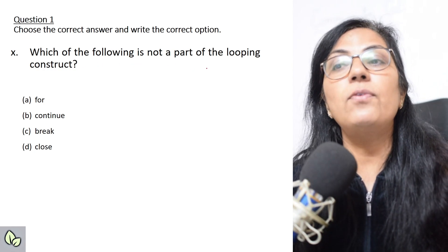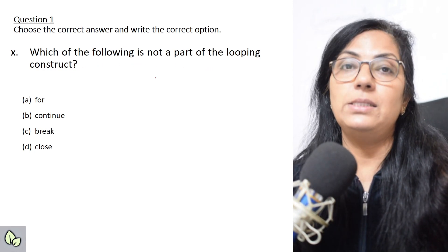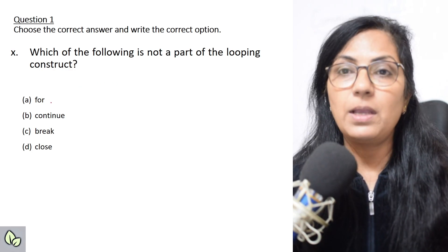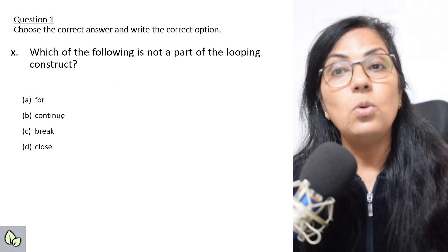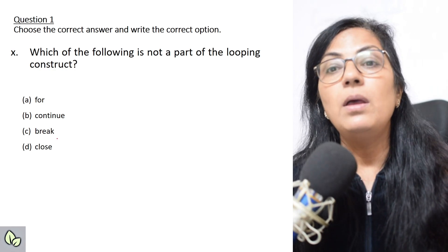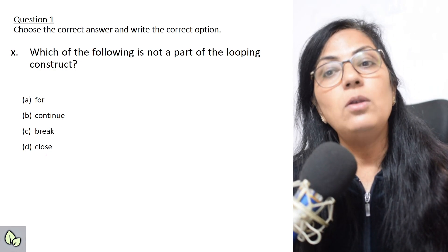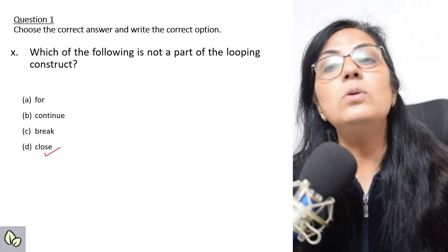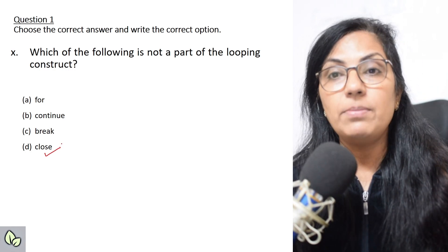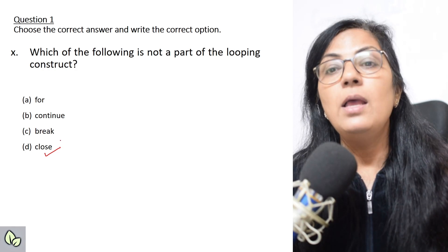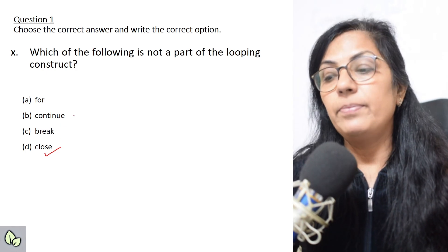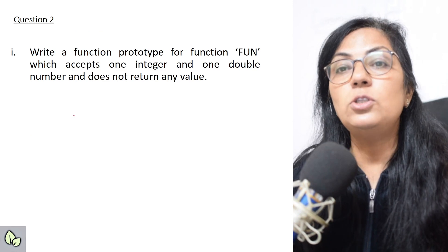Next question: which of the following is not a part of a looping construct? For — obviously a looping construct. Continue — we can use it within a loop. Break — also used within a loop. But 'close' is not used in a loop and is not part of your syllabus either. So the correct answer is close.